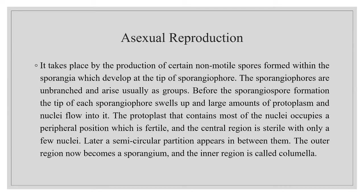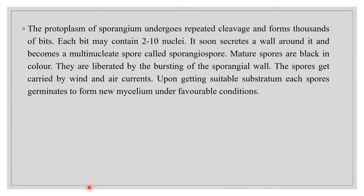During asexual reproduction, the tip of each sporangiophore swells up and a large amount of protoplasm and nuclei flow into the tip. The protoplasm soon differentiates into two regions: a dense peripheral region and an evacuated central region. The peripheral region is fertile and contains numerous nuclei, while the central region is sterile with some nuclei. A semicircular partition then appears between them.